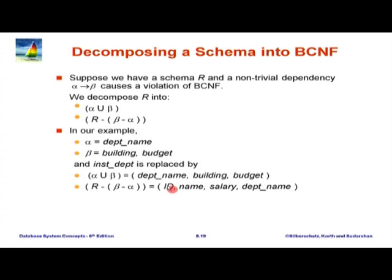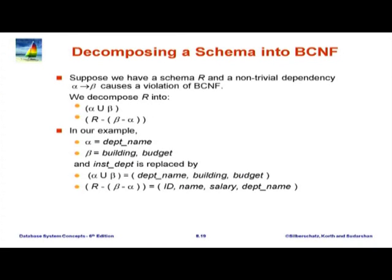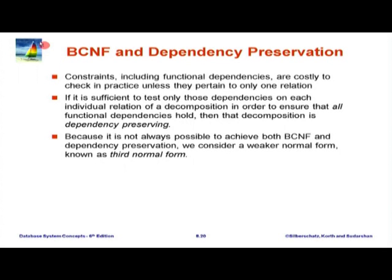This is the basic idea of how to decompose. The next question is how do we know that this particular decomposition is lossless? When we have a situation where the common attributes of these two relations form a super key for one of the two relations, the decomposition is lossless. Here the common attribute is alpha. In our example, department name is alpha, and it is a super key for the first relation because we started with the functional dependency alpha determines beta and created a relation containing exactly alpha and beta. So obviously alpha is a super key there — alpha determines itself and everything in beta.